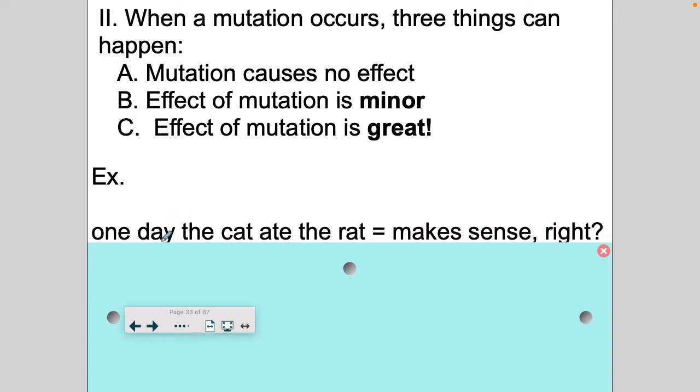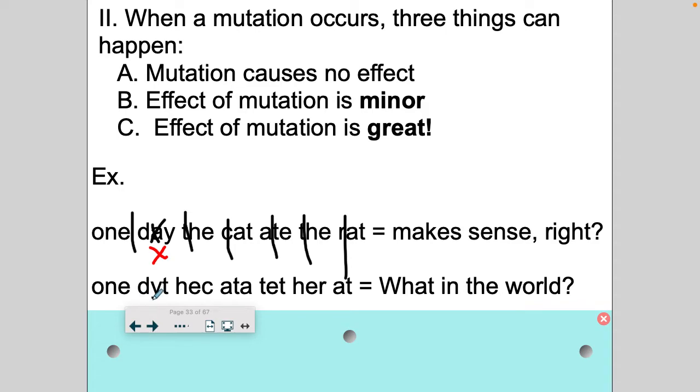But what if I have a mutation where A just completely disappears? And the code is read in three, right? So here's three letters, one, two, three. Here's three letters, one, two, three. Now is my sentence really going to make sense? So let's take a look at it. One, dech, hek, et, her, at. Well, that doesn't make sense.